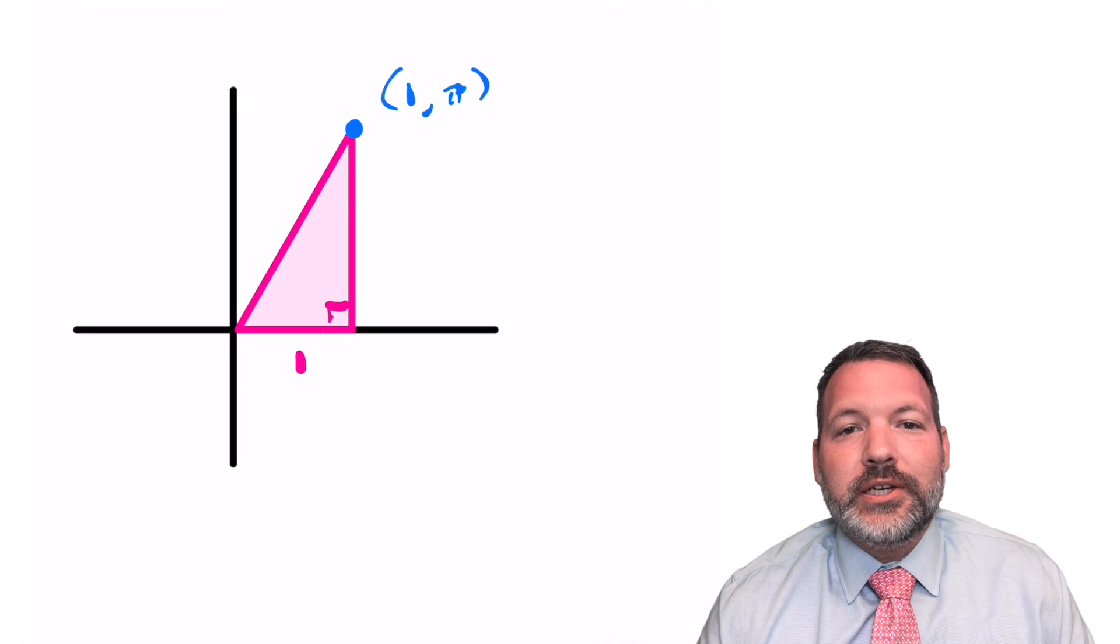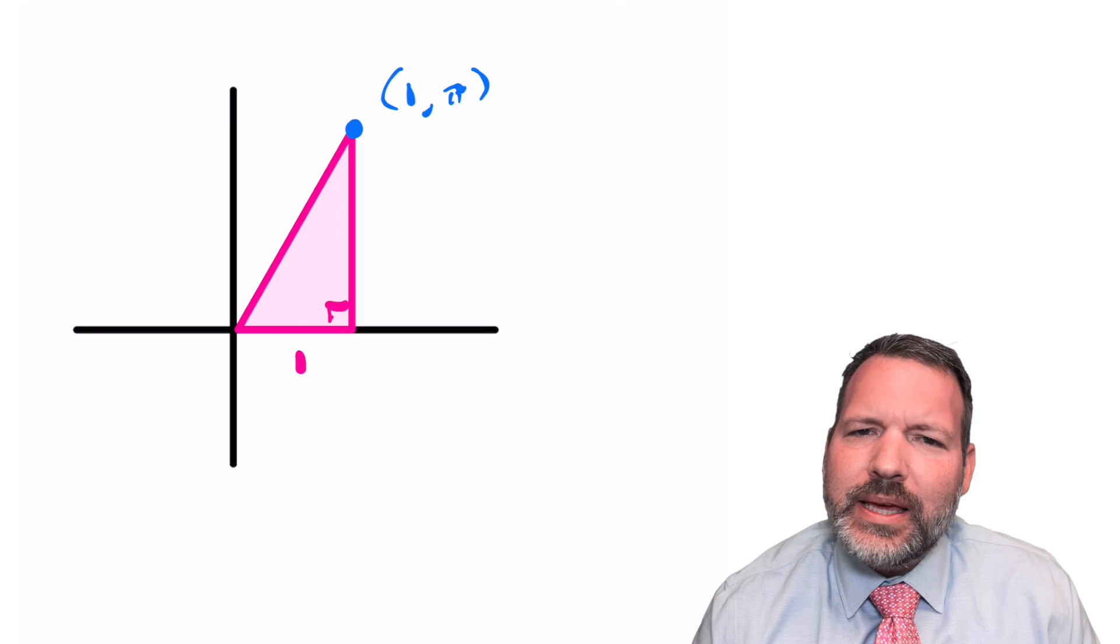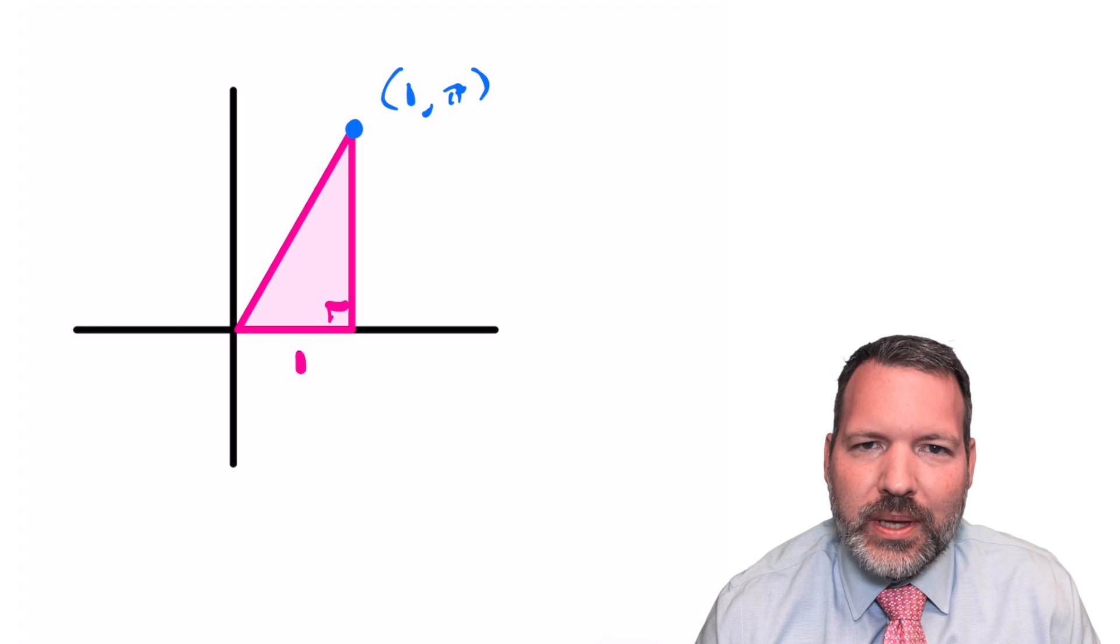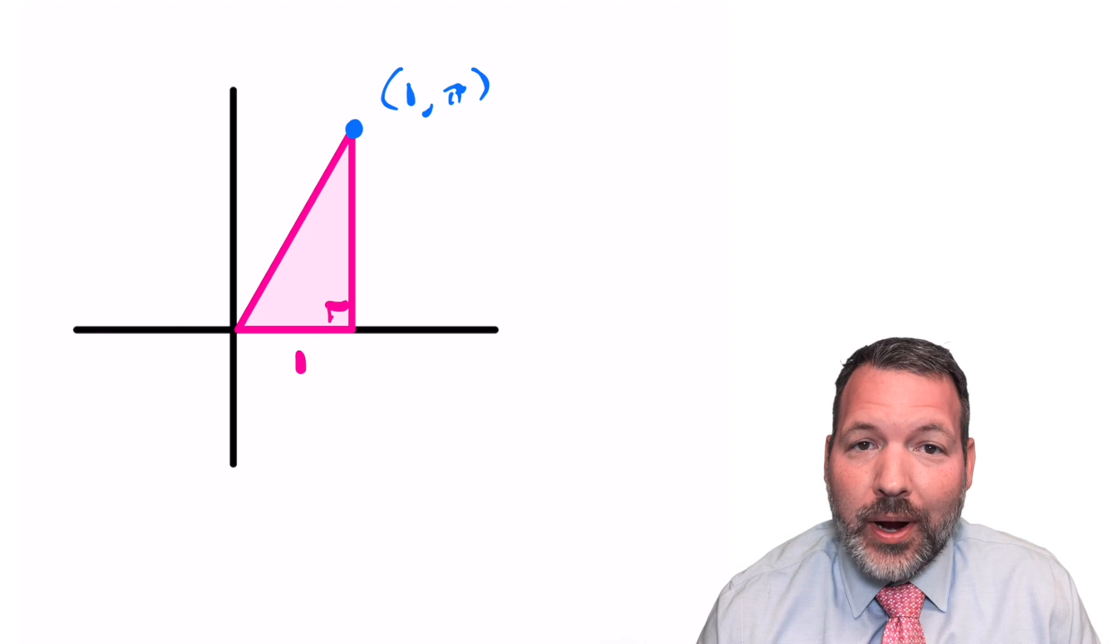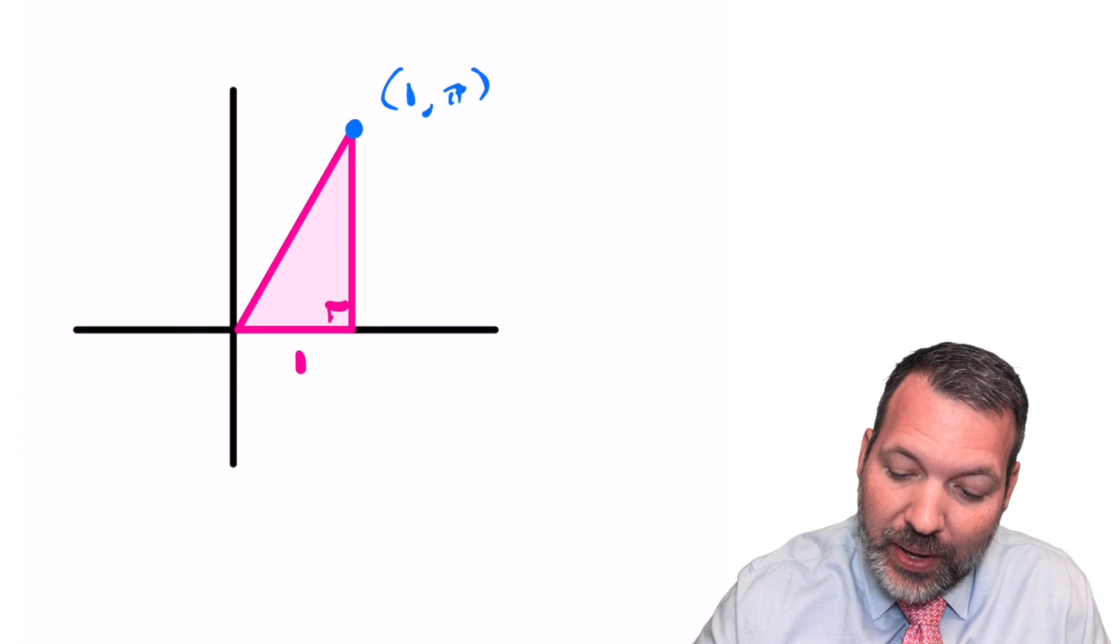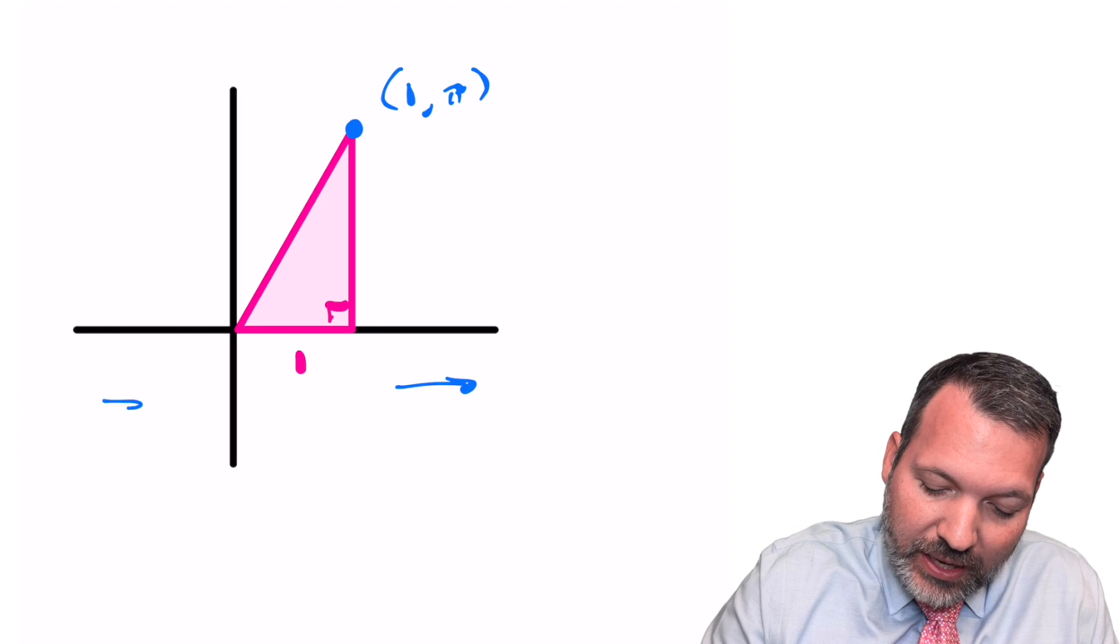In fact, that's what gives us our entry into trying to understand what e to the i pi equals negative one could possibly mean.